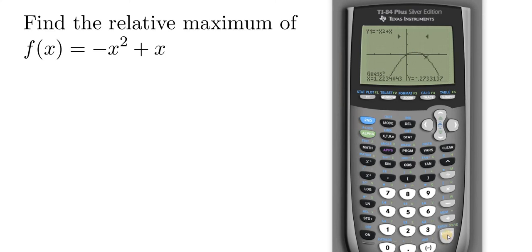It's asking for a guess, so you can just hit enter, and there's the maximum, 0.25. Notice all the decimals here next to the four, that's just five. So the ordered pair would be 0.5 comma 0.25, and the relative maximum is actually just the Y value. It's 0.25.